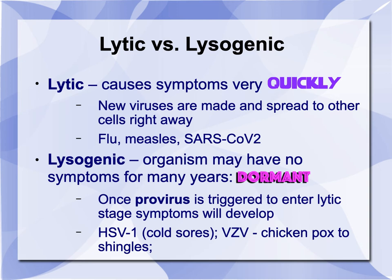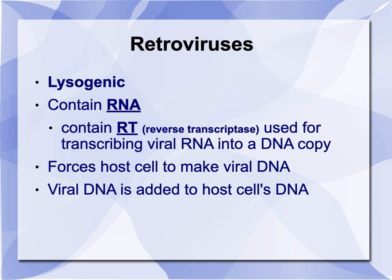The lytic cycle causes symptoms very quickly — new viruses are made and spread to other cells right away. Examples are flu, measles, and SARS-CoV-2. The lysogenic organism may have no symptoms for many years; they lie dormant. However, once the provirus is triggered, it will enter the lytic cycle. HSV-1, which causes cold sores, and VZVA, which is chicken pox, can lay dormant and then cause shingles, typically in older adults.